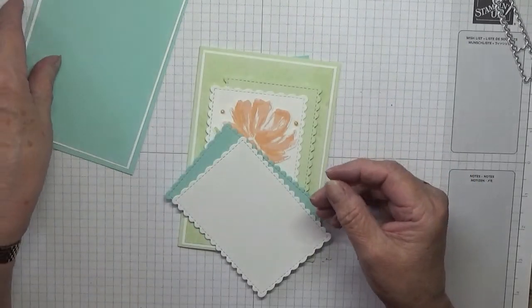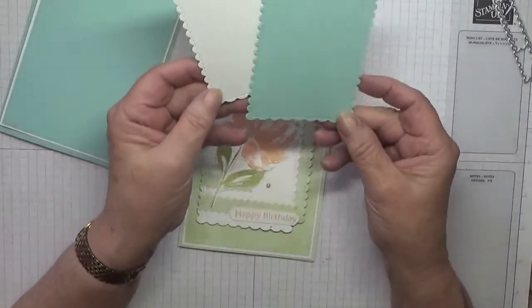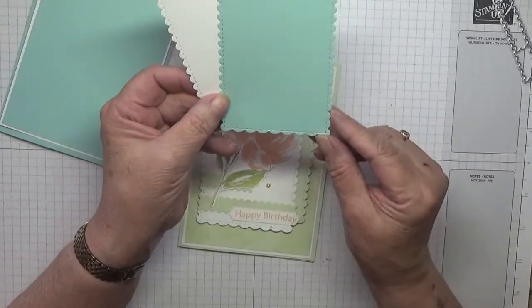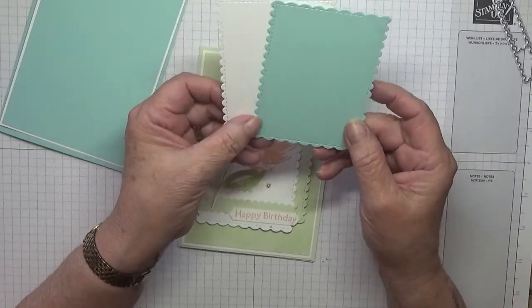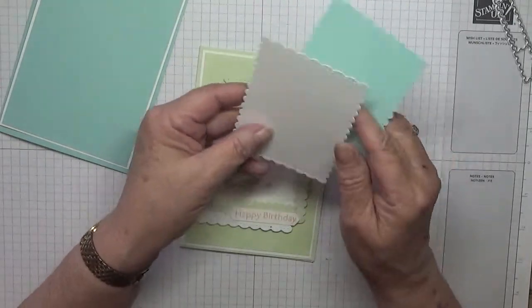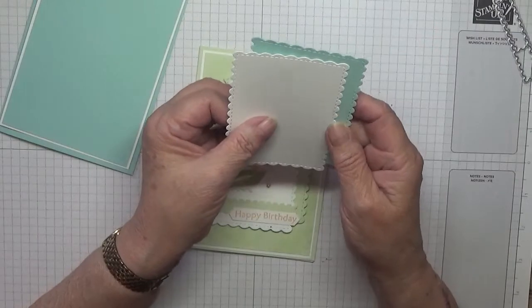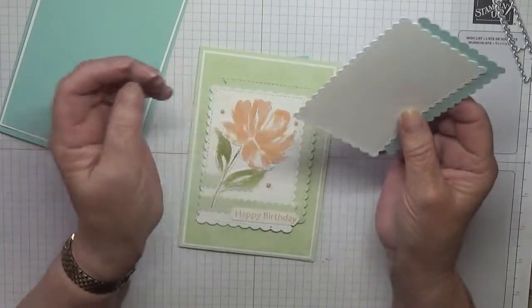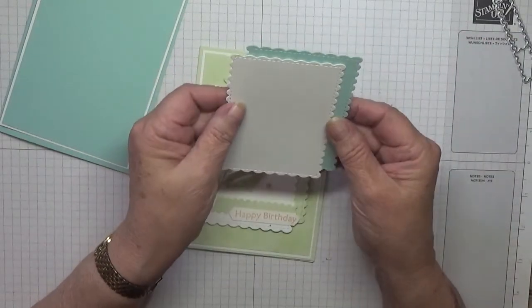I also have two cutouts from the Stitched So Sweetly dies - I've got two exactly the same, one in Pool Party and one in white, and they are going to go on like that.